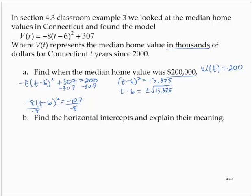Now the square root of 13.375 is 3.66, so t-6 is approximately equal to positive or negative 3.66. So that means that t-6 is equal to -3.66, or t-6 is equal to positive 3.66.